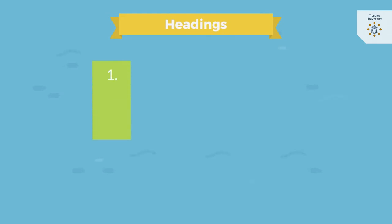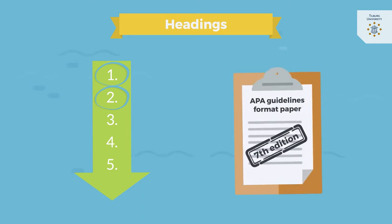There are five levels of headings in APA. A level 1 heading is the most general, whereas a level 5 heading is the most specific. We will explain the first and second level. If you need to use more levels, please refer to the official APA manual.